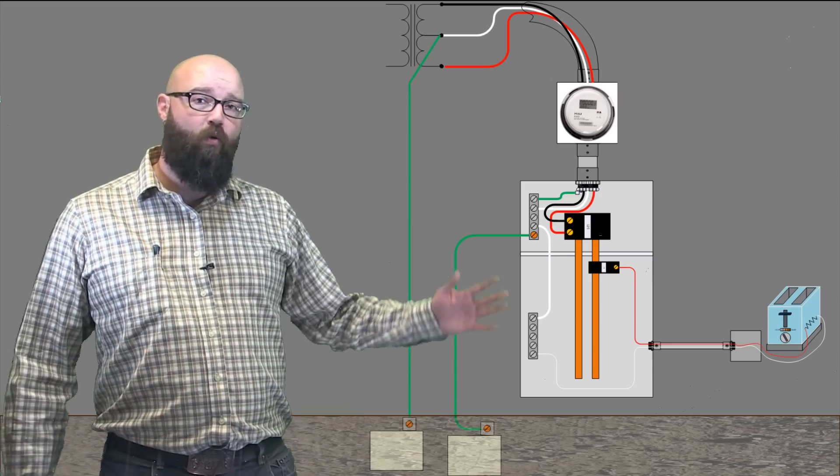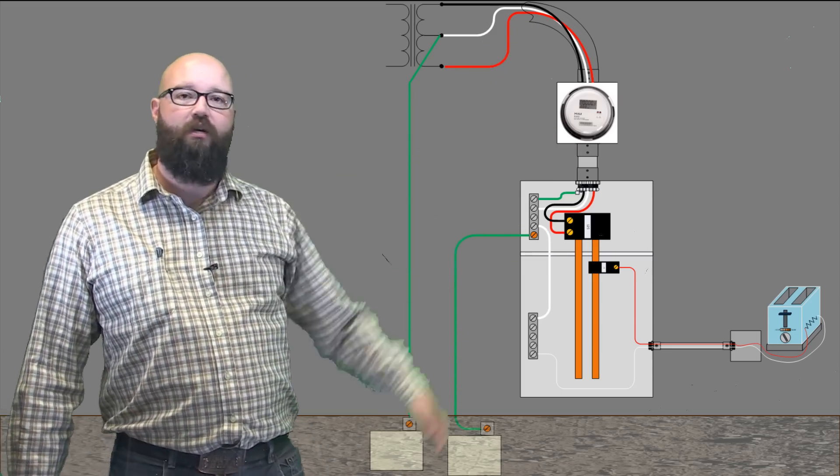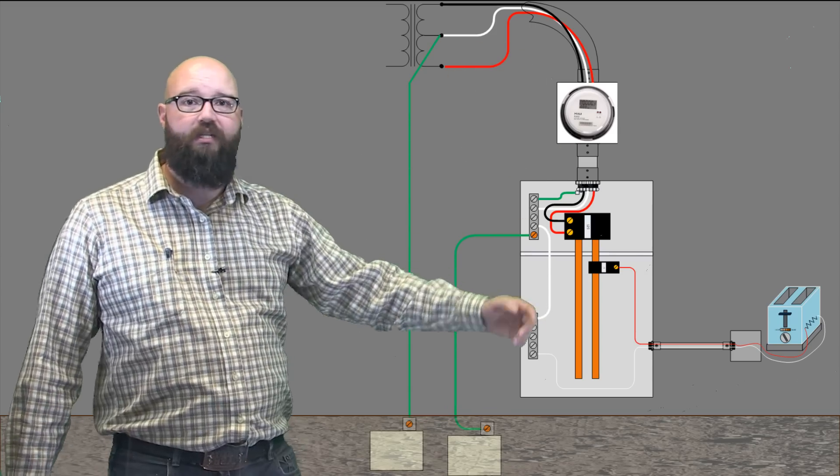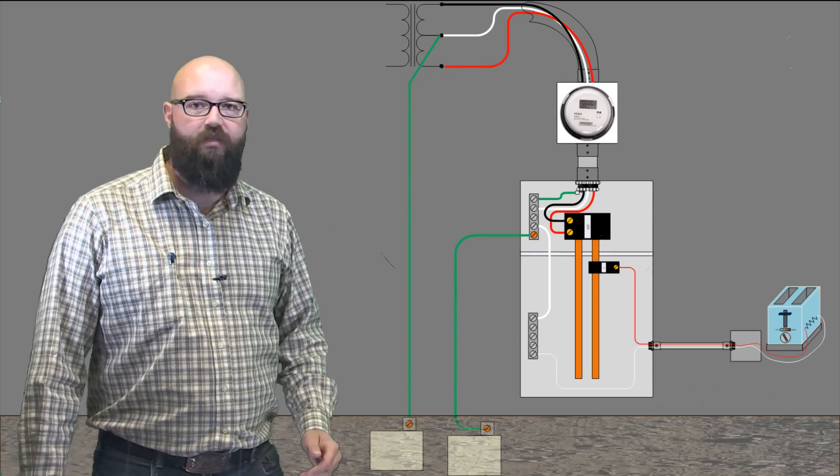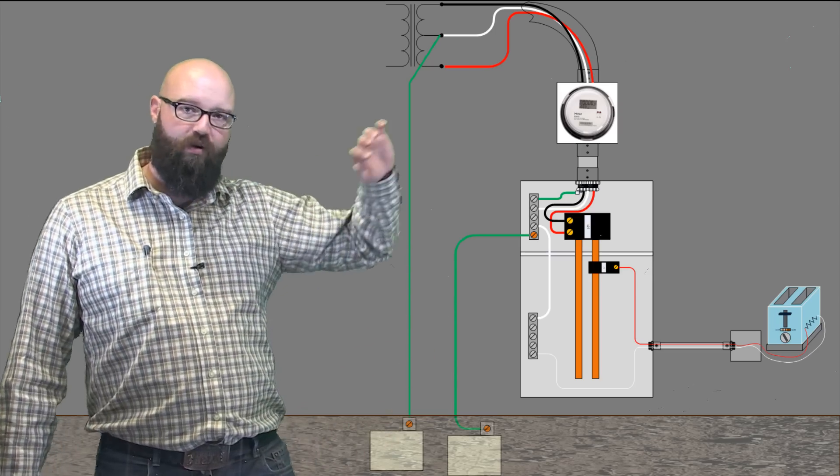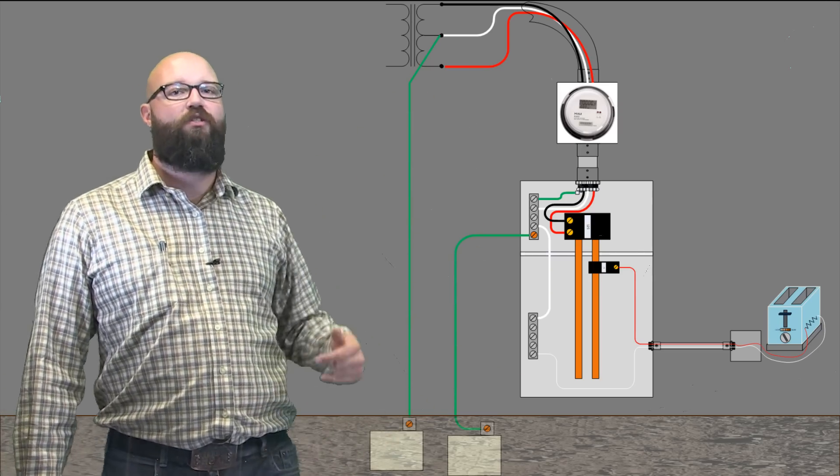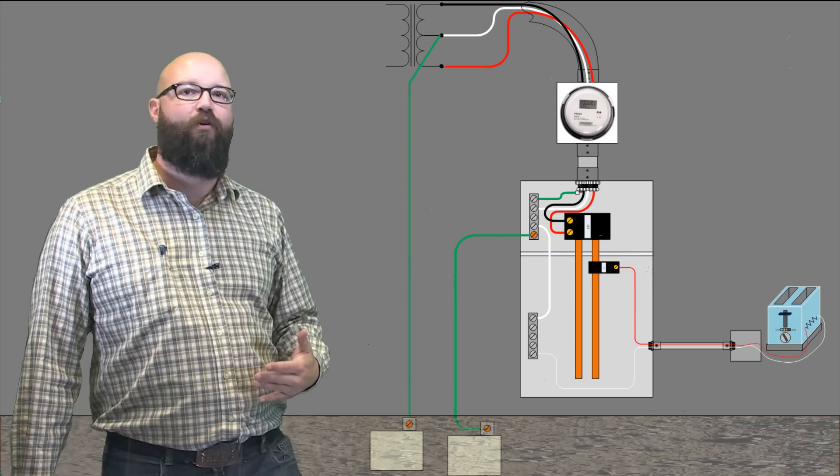So let's take a look here. What I'm going to do is animate these conductors here. You'll see them kind of highlight as we move through the path of current. Obviously this is an AC circuit, so current isn't always going to be flowing in one direction. This is just to capture the path of current flow.